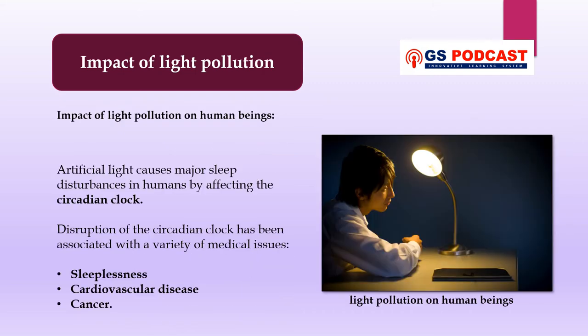Regarding the impact of light pollution on human beings, artificial light causes major sleep disturbances by affecting the circadian clock, which is a 24-hour day-night cycle that affects psychological processes in practically all organisms. Brain wave patterns, hormone generation, cell regulation, and other biological functions are examples of these processes. In humans, disruption of the circadian clock has been associated with a variety of medical issues including sleeplessness, cardiovascular disease, and cancer. High-intensity and unregulated artificial light has serious negative impacts on living beings.